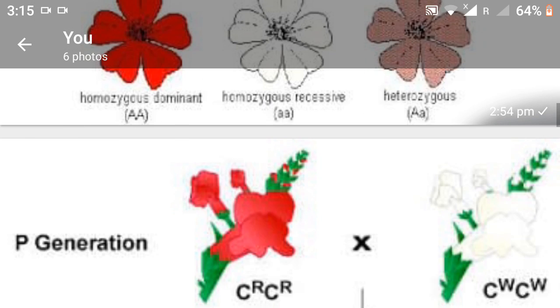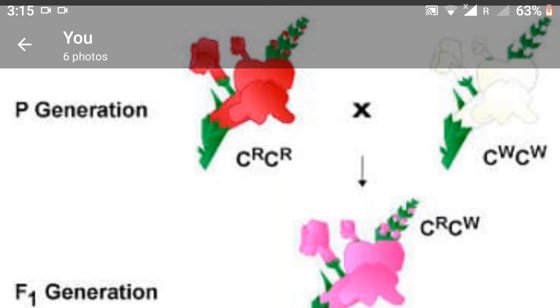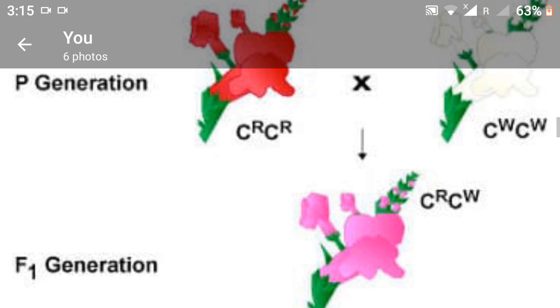The progeny in F1 generation does not resemble either of the parents and exhibits intermediate characters. This is because the dominant allele capital R is partially dominant over the other allele small r. Therefore, the recessive allele small r also gets expressed in the F1 generation, resulting in the production of intermediate pink flower progeny with the capital R small r genotype.